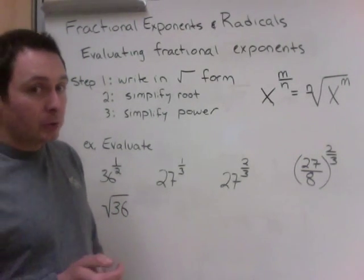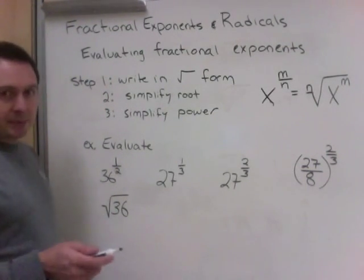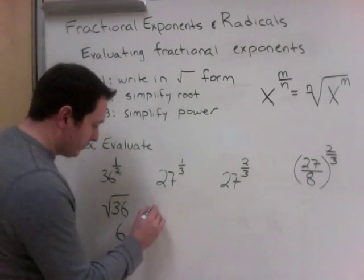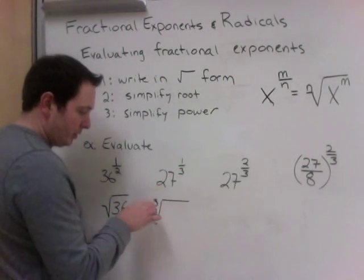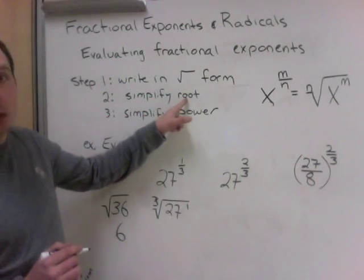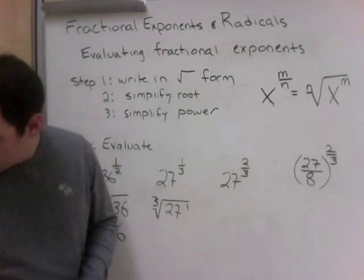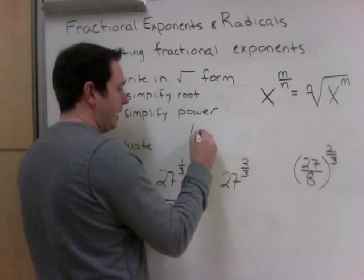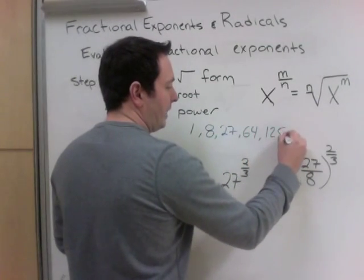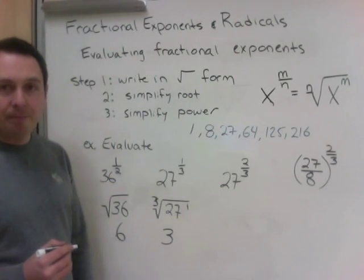For 27 to the power of 1 third: using boots and hats, we get the cube root of 27 to the power of 1. You should know your cube roots: 1, 2×2×2=8, 3×3×3=27, 4×4×4=64, 5×5×5=125, 6×6×6=216. The cube root of 27 is 3. You should know your square roots and cube roots up to these values.